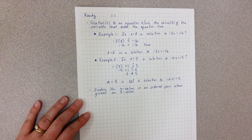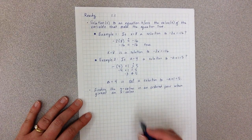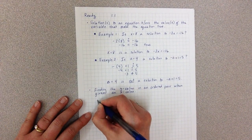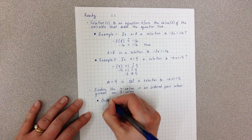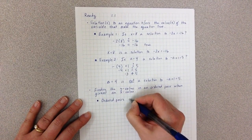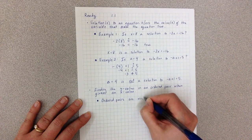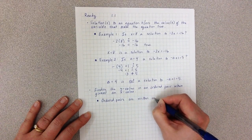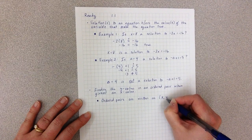So two things here. We need to remember that ordered pairs are written as x, comma, y.